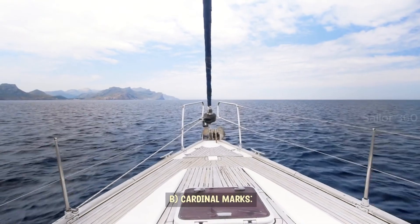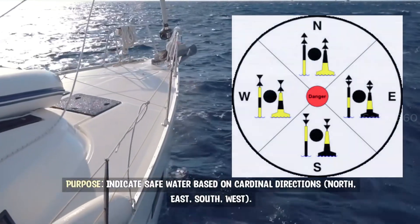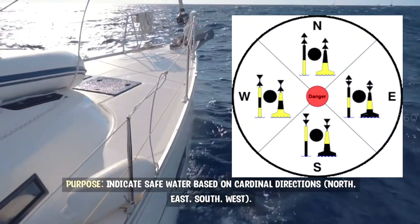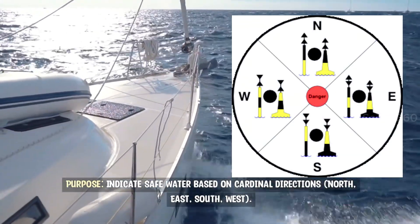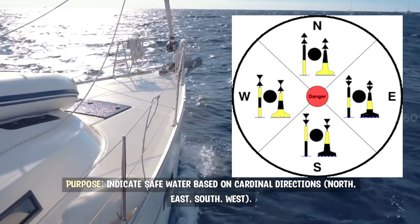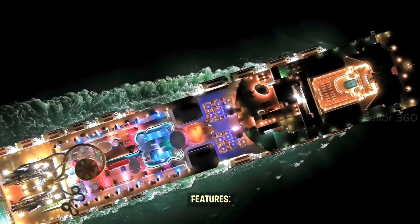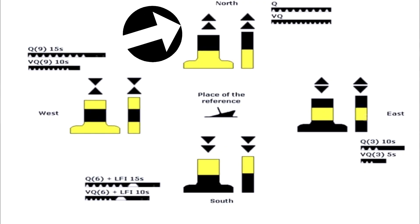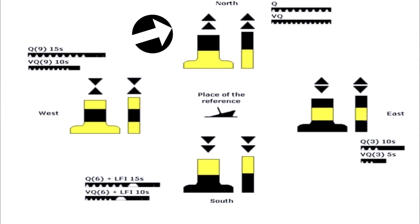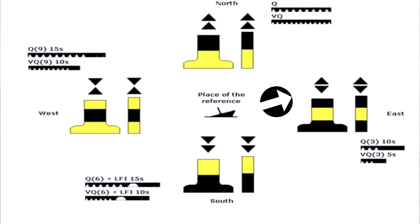Cardinal marks. Purpose: indicate safe water based on cardinal directions — north, east, south, west. Features: North — two black cones pointing up, continuous quick or very quick white light. East — two black cones base to base, white light in groups of three flashes.